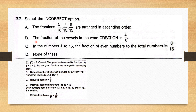Let's see option B. The fraction of the vowels in the word 'cation' is 4 by 8. Total number of alphabets are 8. The vowels are E, A, I, O — total 4 vowels. So the fraction is 4 by 8, which is also correct.